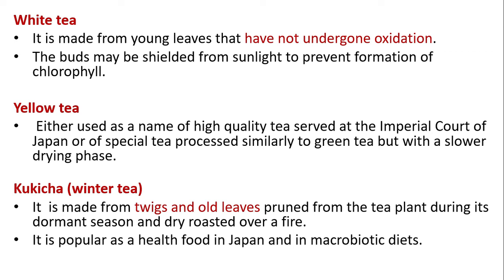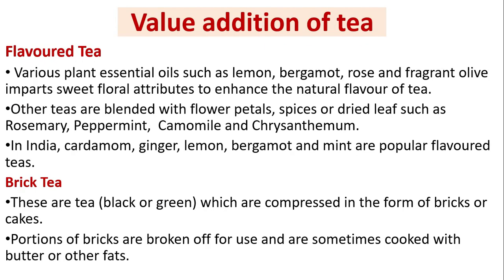Kukicha (winter tea) is made from twigs and old leaves pruned from the tea plant during its dormant season and dry-roasted over a fire. It is popular as a health food in Japan and in macrobiotic diets. Value addition of tea — flower tea: various plant essential oils such as lemon, bergamot, rose, and fragrant olive impart sweet floral attributes to enhance the natural flavor. Other teas are blended with flower petals, spices, or dried leaves such as rosemary, peppermint, chamomile, and chrysanthemum. In India, cardamom, ginger, lemon, bergamot, and mint are popular flavored teas.